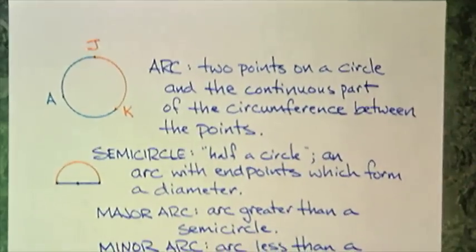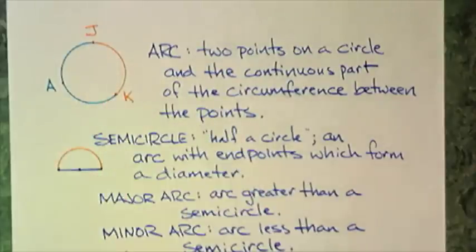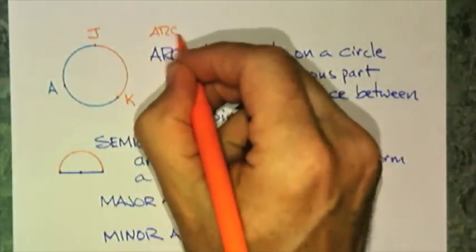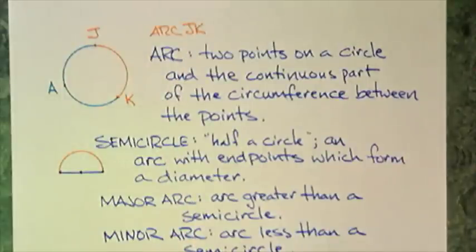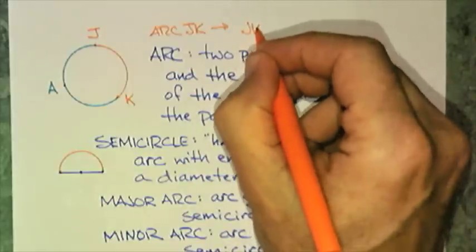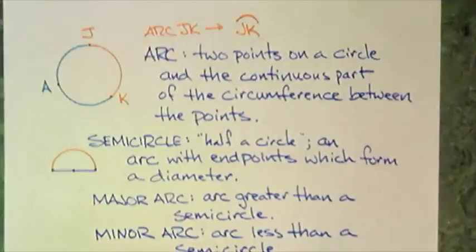The next couple of words deal with parts of the circumference. And here we go. An arc or two points on a circle and the continuous part of the circumference between the two points. I made a picture and I have three points on the circumference. And we can say arc JK. And that's in English, which is the same thing as JK. Those are the end points. And you put a curved arc over the top of it.